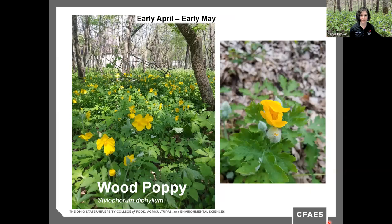Wood poppy is a perennial in the poppy family native to moist woodlands of eastern North America. It produces bright yellow to yellow-orange flowers in large numbers in the early spring, pollinated by bees. The plant will go dormant if the soil becomes very dry, but foliage will persist into the summer as long as it has sufficient moisture. This is a showy, relatively long-lived wildflower that adapts easily to flower gardens and is often grown as an ornamental in beds as well as naturalistic plantings.